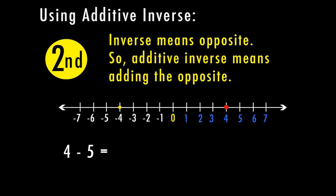So here's what that means: I'm going to take my four, change my minus sign to a plus, and then do the opposite of five, which is negative five. All an additive inverse is saying is that four minus five and four plus negative five mean the same thing. So four minus five means if I start at four and I take away five, I end up at negative one. Same thing here — if I start at four and take away five, I end up at the same place. It's the same situation.